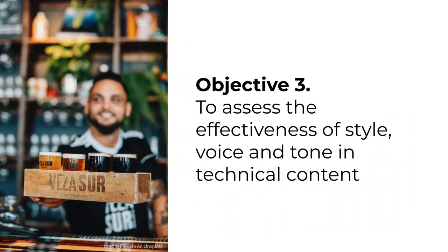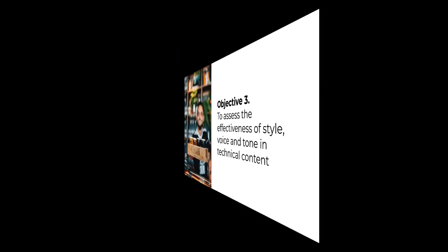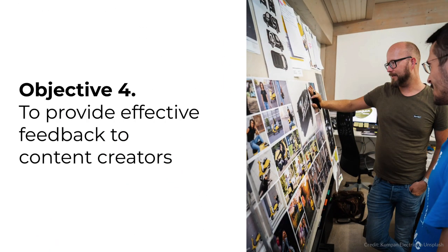The third objective is for you to assess the effectiveness of style, voice, and tone in technical content. This goal is directly linked to objective two — to manipulate style, voice, and tone, you must be able to assess its effectiveness within its rhetorical context. You'll learn one specific testing technique in module six. The fourth objective is for you to provide effective feedback to content creators. Much of the work tech comm pros do is editorial, so you'll practice techniques for giving feedback in many peer review activities starting in module two.